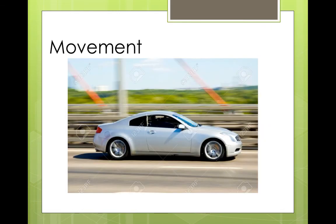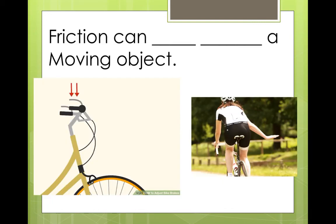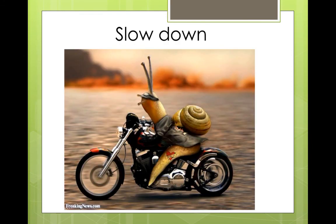Which way is the car moving? Easy. It's moving right. So, again, friction is going left. Friction can slow down a moving object. When we ride a bicycle, we pull the brakes. Friction can slow down a moving object. Slow down.